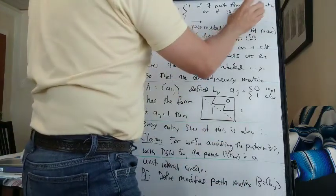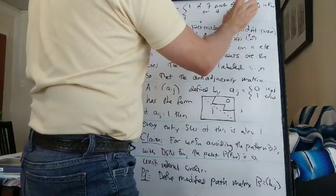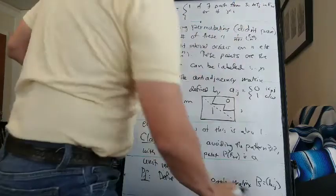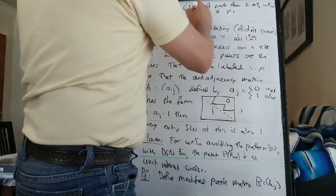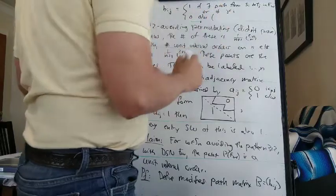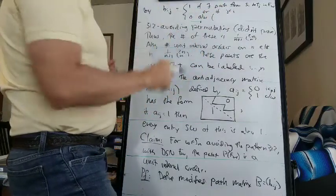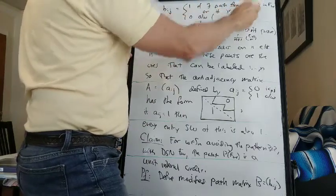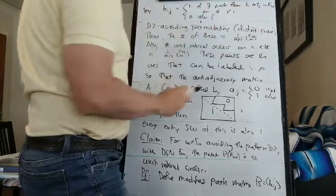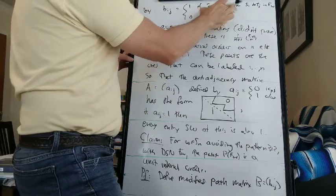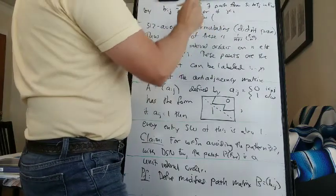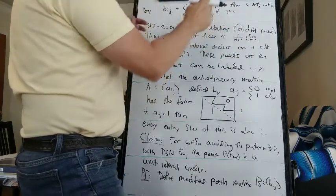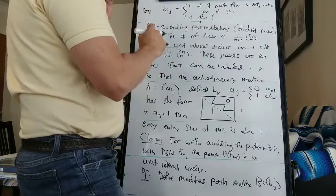Well, there's always a path from i to i, so this means if j is less than i. And zero otherwise. So the normal path matrix would say we'd have one if there's a path from S_i to T_j in the network, period. But now we're adding or if j is less than i. So this makes all of the entries below the diagonal equal to one.